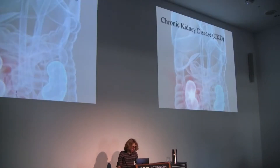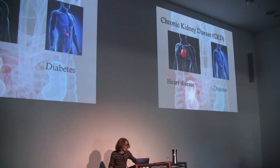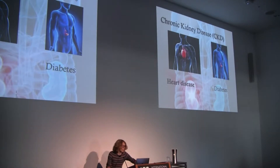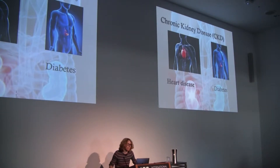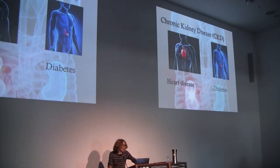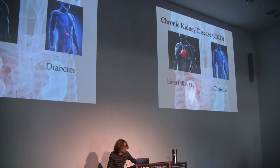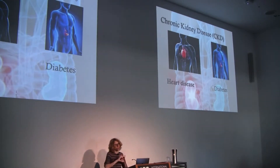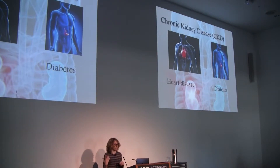We got an improvement in predicting longitudinal trajectories for various lab values associated with chronic kidney disease by using this multivariate model with the dependency structure. Another thing we were interested in: can we predict a particular trajectory and at the same time predict some of the really bad events that tend to happen to CKD patients? If you're having problems with kidney functioning, all kinds of other bad things might go along with that — a heart attack, a stroke, etc.